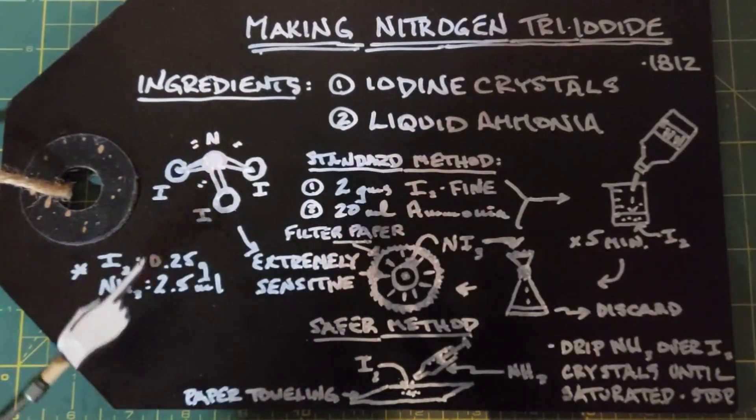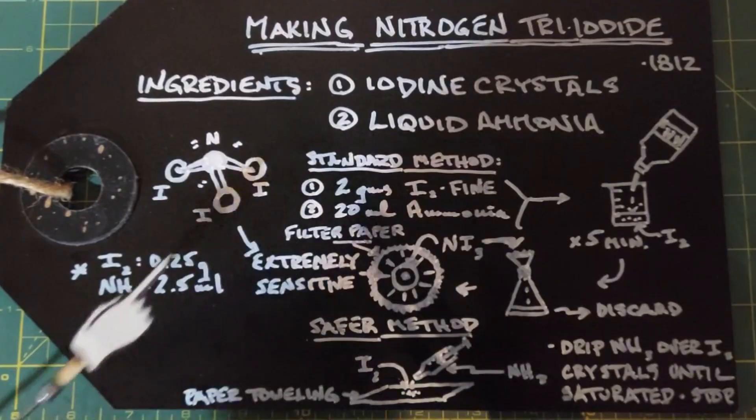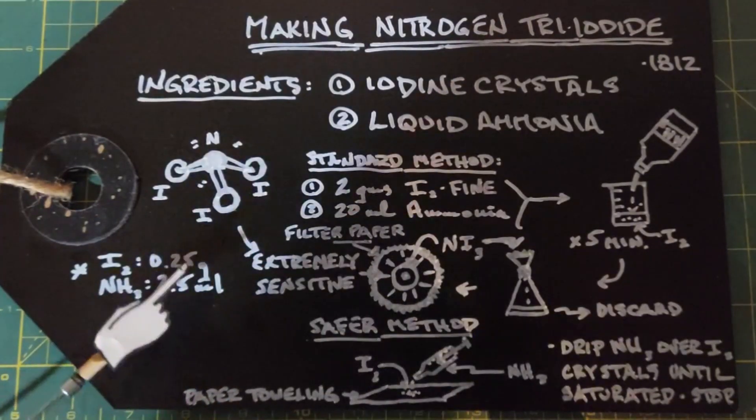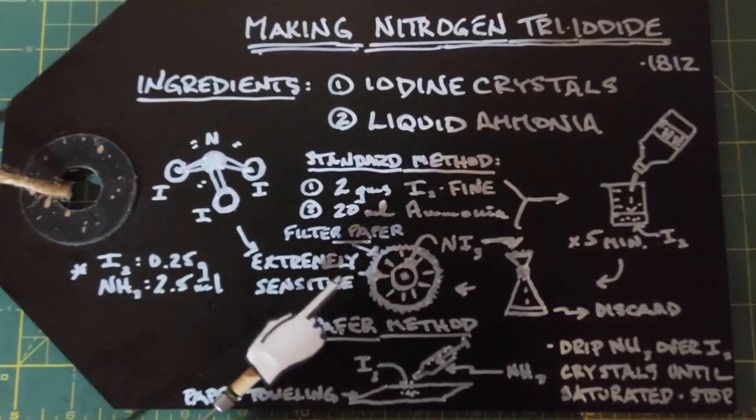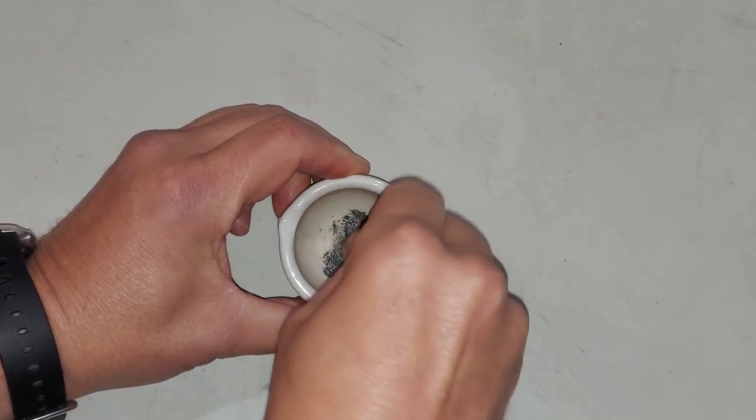As the iodine I gathered from the original experiment was only half a gram, 0.5 grams, I'm going to divide it in two piles of 0.25 grams. If you use this ratio, that means we'll only need two and a half milliliters of ammonia for every 0.25 grams. I'll start by doing the standard method first. I'm grinding my quarter gram here of iodine for the first experiment.